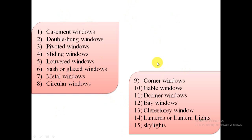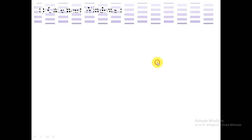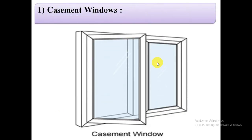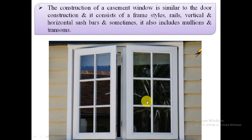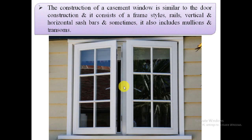Firstly, we will discuss casement windows. These are windows whose shutters open like doors. The construction of a casement window is similar to door construction and it consists of a frame, styles, rails, vertical and horizontal sash bars, and sometimes it also includes mullions and transoms.